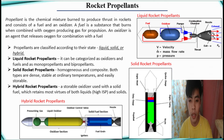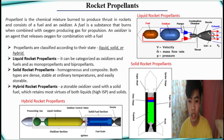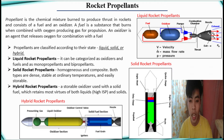Propellants are classified according to their state: liquid, solid, or hybrid. In liquid rocket propellants, the fuel and oxidizer are stored in separate tanks. Solid rocket propellants are in the form of solid materials, and the propellant is a mixture of two components: oxidizer and fuel. Hybrid rocket propellants are a combination of solid and liquid propellant engines.